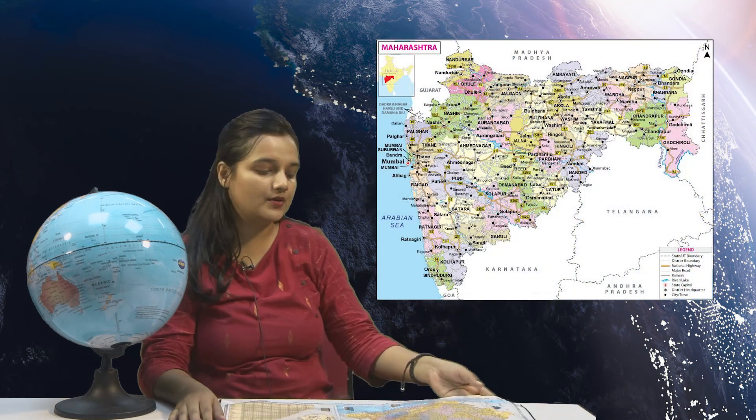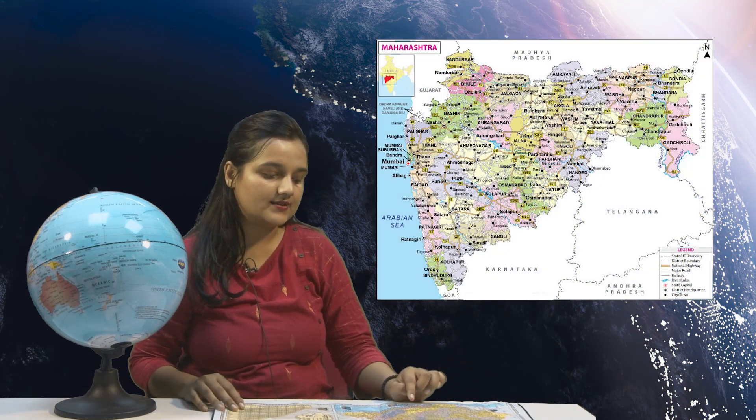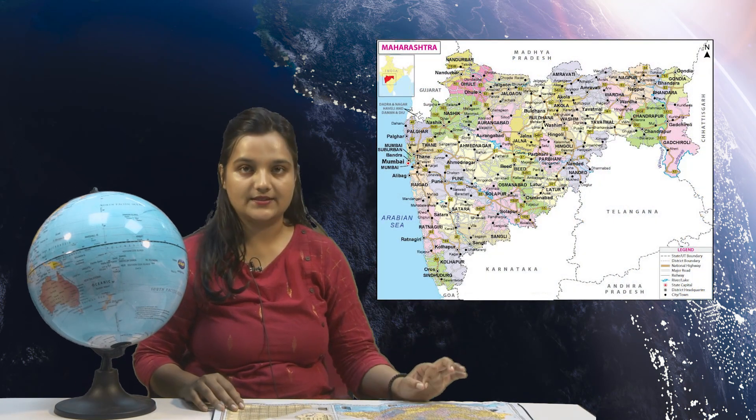Maps and globes have been used for ages to study paths and find places. On a map you can find paths and important highways, whereas on a globe you have more important features which can be highlighted for geology purposes.